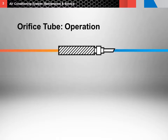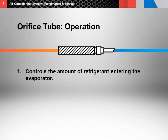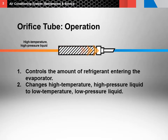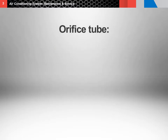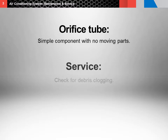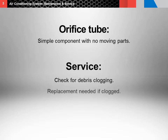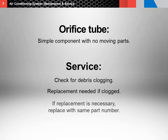Next, the orifice tube. The orifice tube is used to control the amount of refrigerant entering the evaporator. It changes high-temperature, high-pressure liquid to low-temperature, low-pressure liquid through a tube that's similar to that of an expansion valve. The refrigerant passes through the evaporator and leaves as a liquid. An orifice tube is a very simple component with no moving parts. About the only thing that ever goes wrong with them is clogging from debris, which always requires orifice tube replacement. If replacement is necessary, replace it with the same part number.